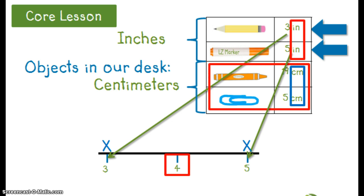Notice that we still have a crayon and paper clip measurements. But the pencil and marker were measured using standard measurement inches. The crayon and paper clip were measured using the metric unit centimeters. Because these objects were measured using different units, we must show that data on a different line plot.